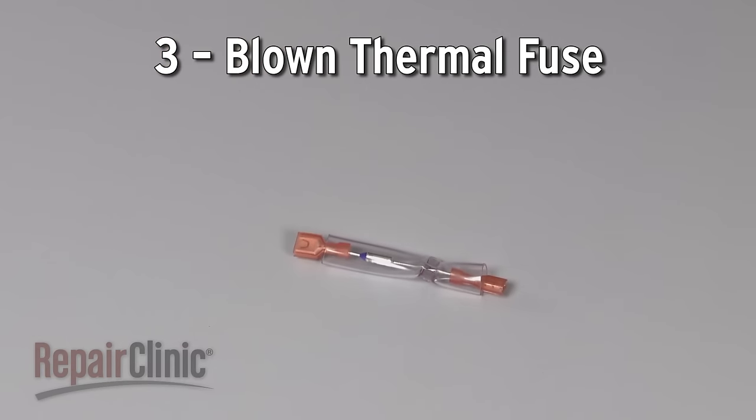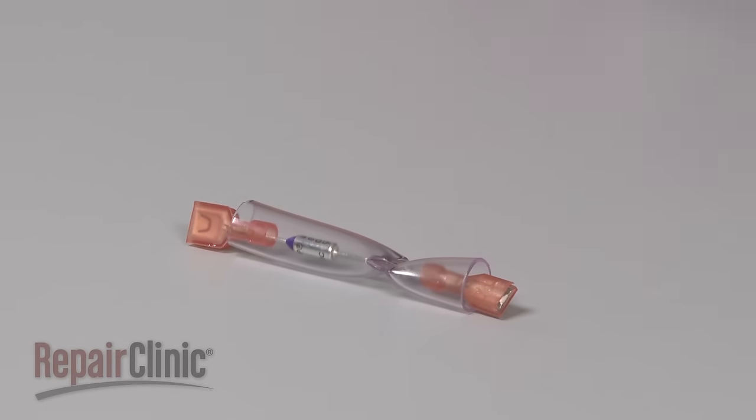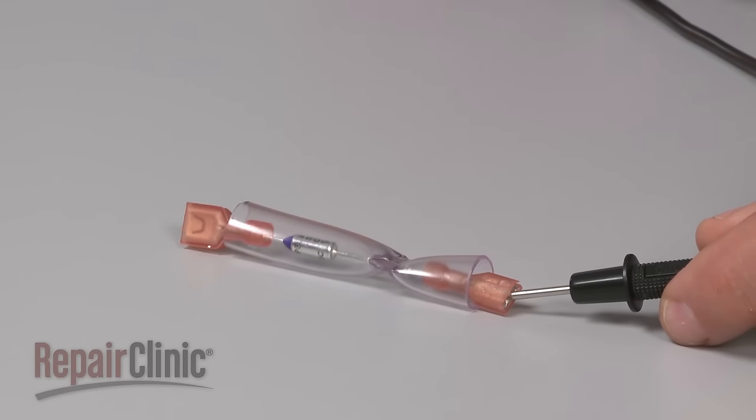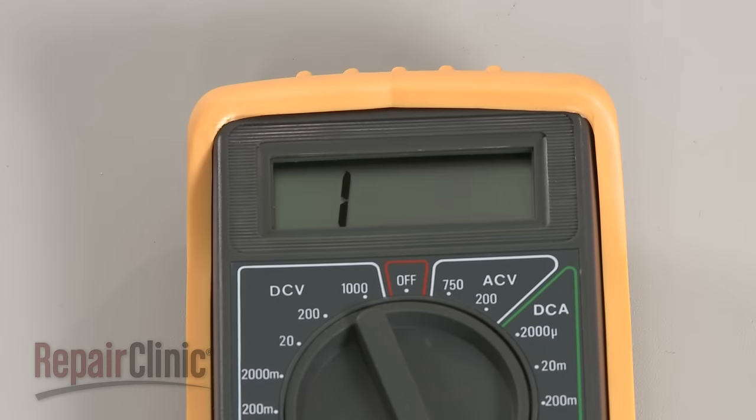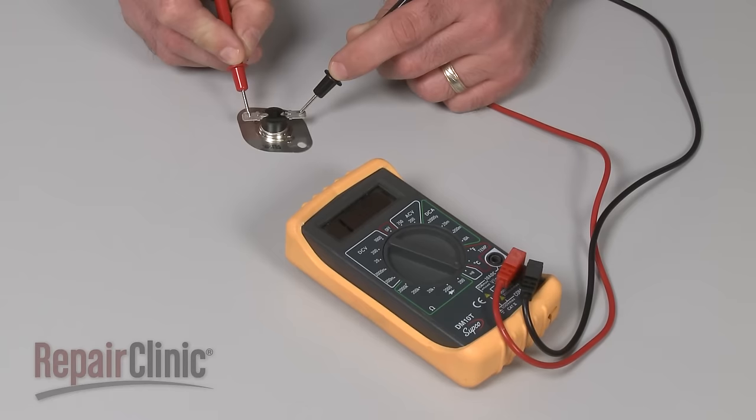On some models, a thermal fuse will blow if the oven gets too hot, shutting off power to the oven. You can use a multimeter to test the thermal fuse for continuity, a continuous electrical path present in the fuse. If the fuse tests negative for continuity, it will need to be replaced.